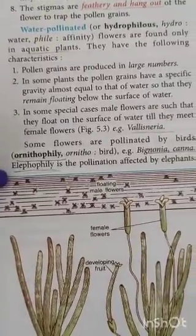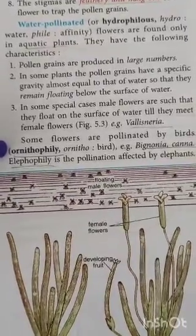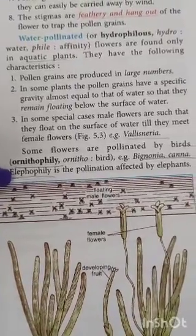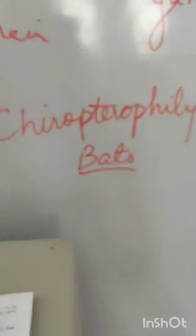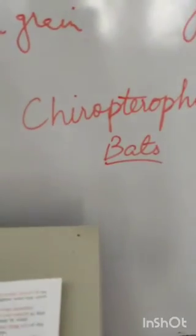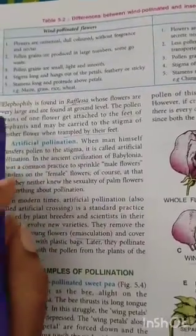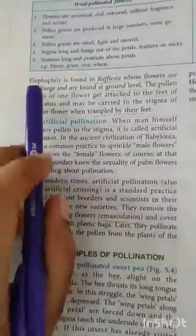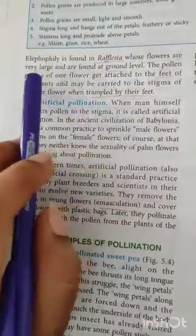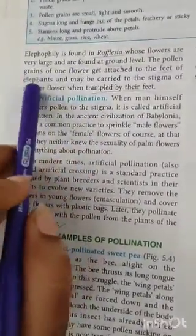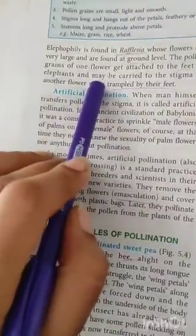Other than these, we have ornithophily — pollination done by birds, with examples like Bignonia and Canna. We also have elephophily, where pollination is done by elephants; this is found in Rafflesia, whose flowers are very large and at ground level, so pollens attach to the feet of elephants and are carried to the stigma of another flower. There is also chiropterophily, where pollination is done by bats.